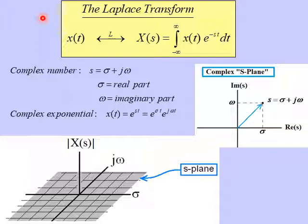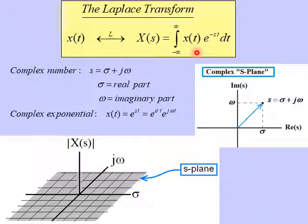Here's the definition of the Laplace Transform. It takes a function of time, for example x of t, and converts it into a function of the variable s. Note that the integral which defines the Laplace Transform is the exact same integral as the Fourier Transform integral, but instead of j omega, we now have the variable s in the exponent.